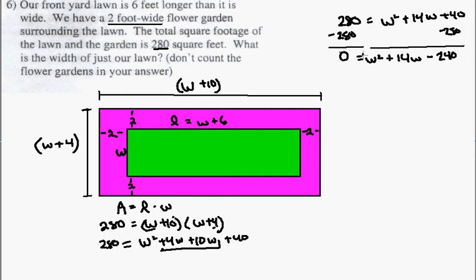So this is zero, and this is w squared plus 14w minus 240. So, my coefficient of my w squared term is 1, so my a equals 1, my b equals 14, and my c is equal to negative 240.